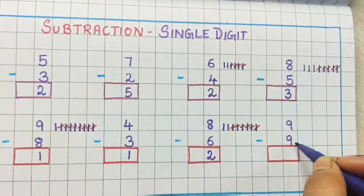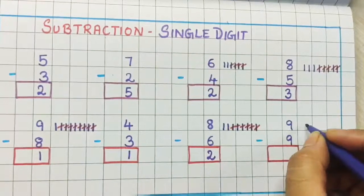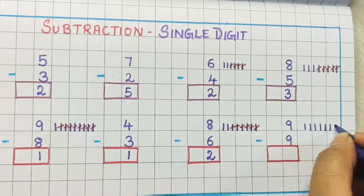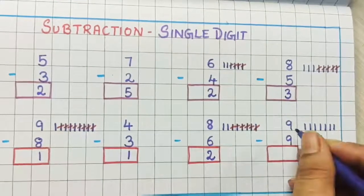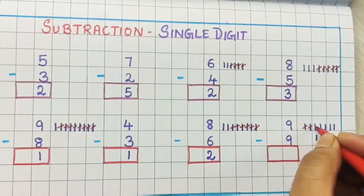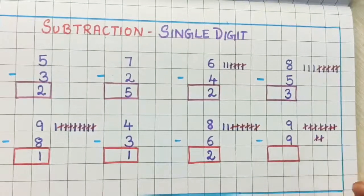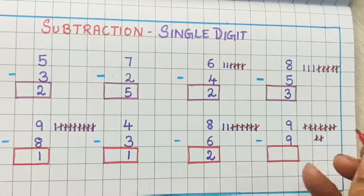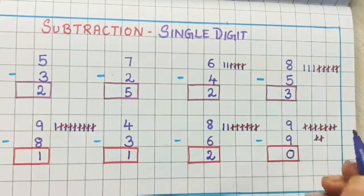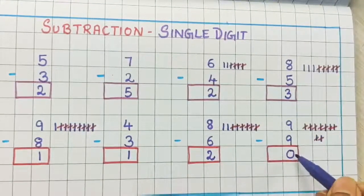Now 9 minus 9. I am going to draw 9 lines: 1, 2, 3, 4, 5, 6, 7, 8, 9. Now from this I am going to remove 9 lines: 1, 2, 3, 4, 5, 6, 7, 8, 9. Is anything left? No — no stick is left. So the answer is 0. When you remove any number from itself the answer is always 0.